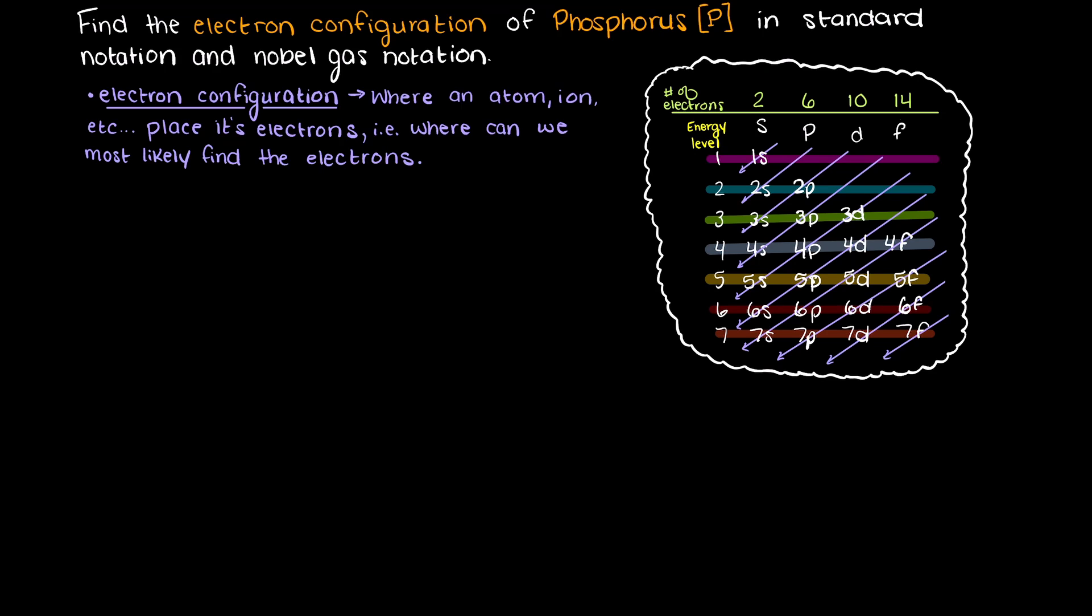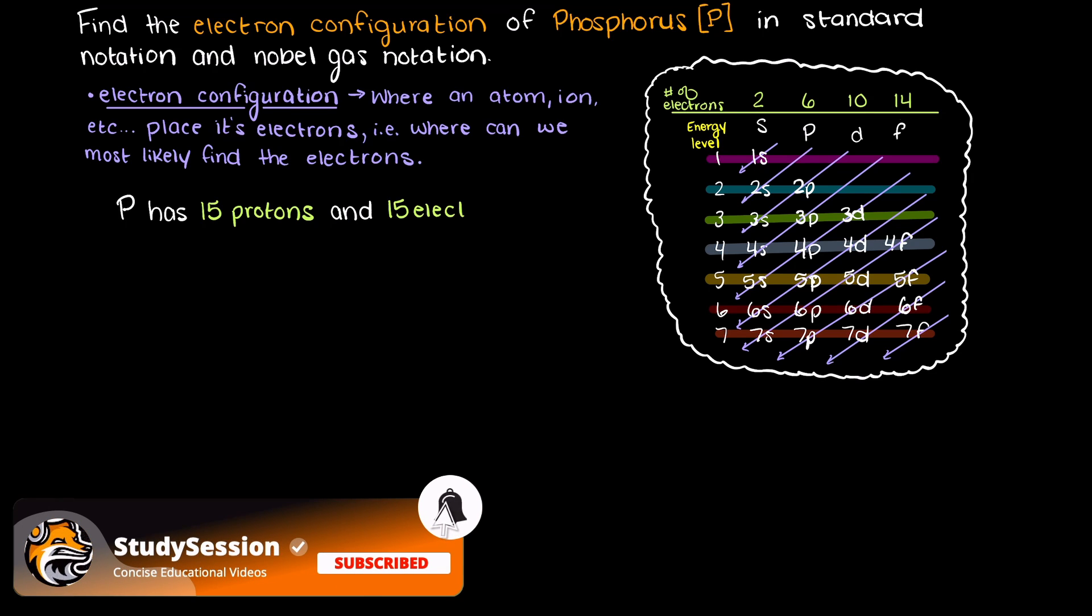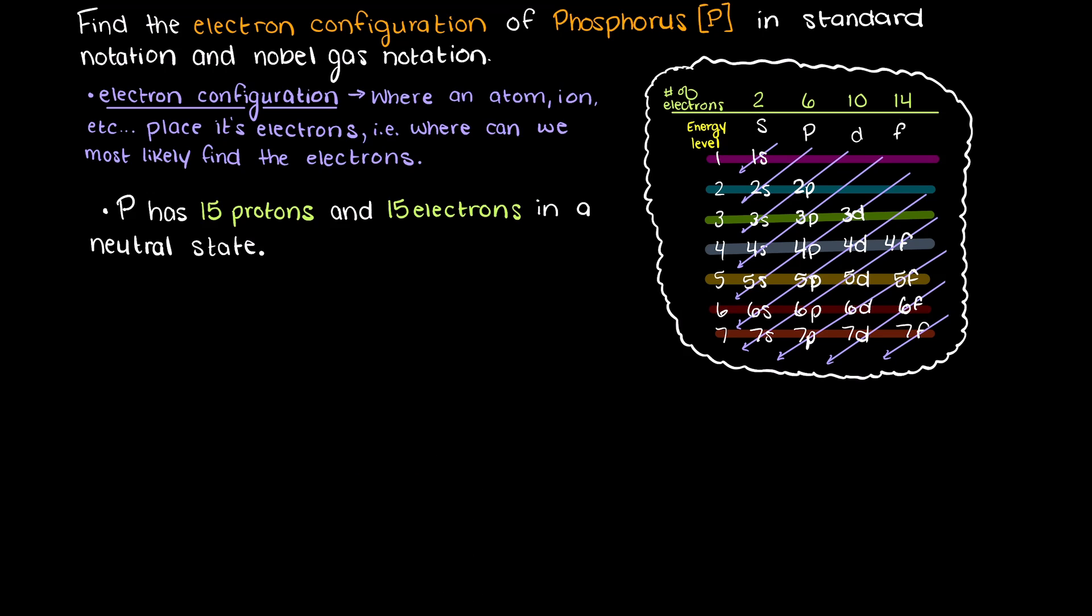Looking this up, we can see that phosphorus is number 15 on the periodic table, meaning that in a neutral state, no positive or negative charge, our phosphorus will have 15 protons in its nucleus and thus 15 electrons surrounding that nucleus.